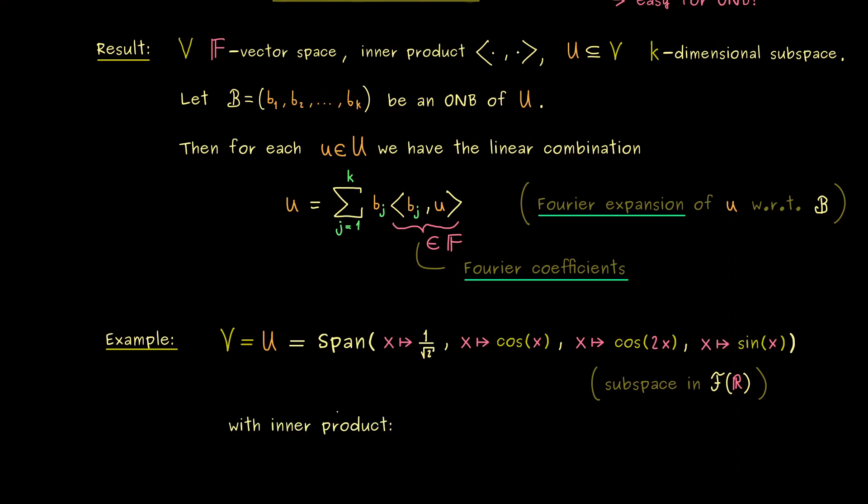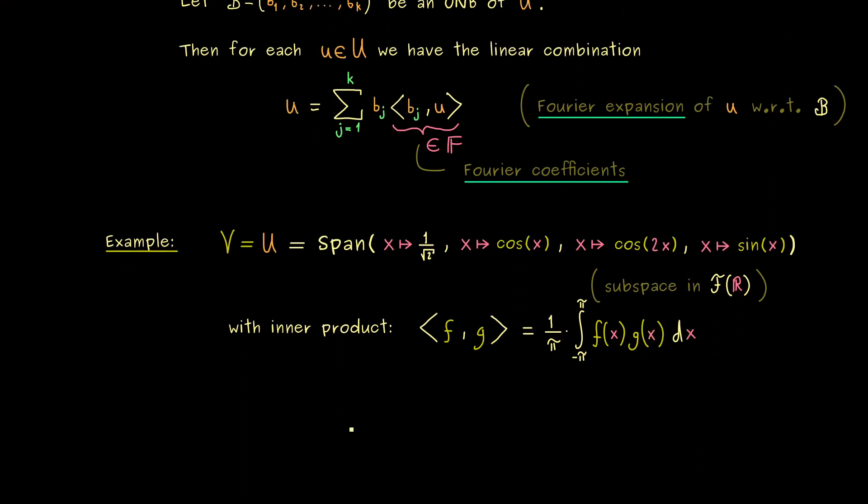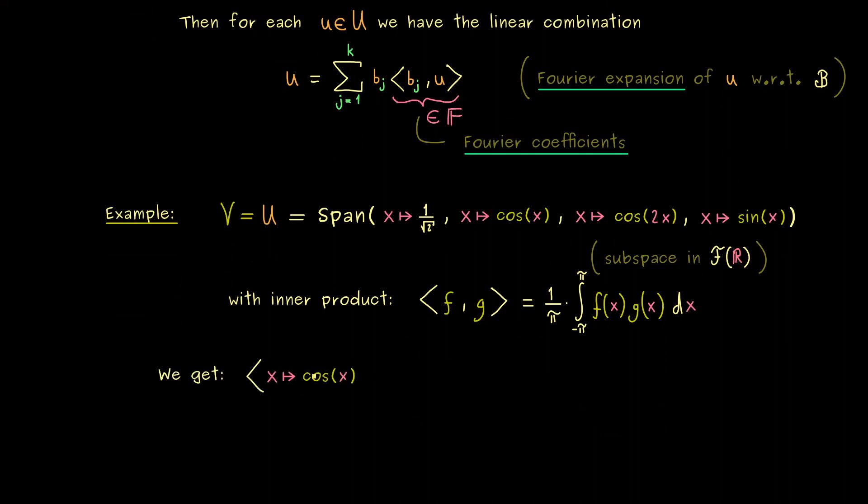Okay, and now on this vector space V we can define an inner product. Hence we have to put in two functions f and g. And you might already know that an integral can help for the definition. In fact, we could say we have the factor 1 divided by π times the integral from minus π to π. And then we simply have the product of f and g inside the integral.